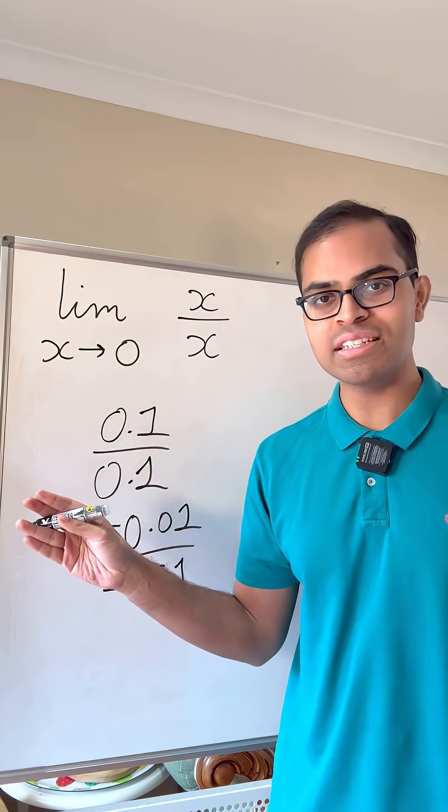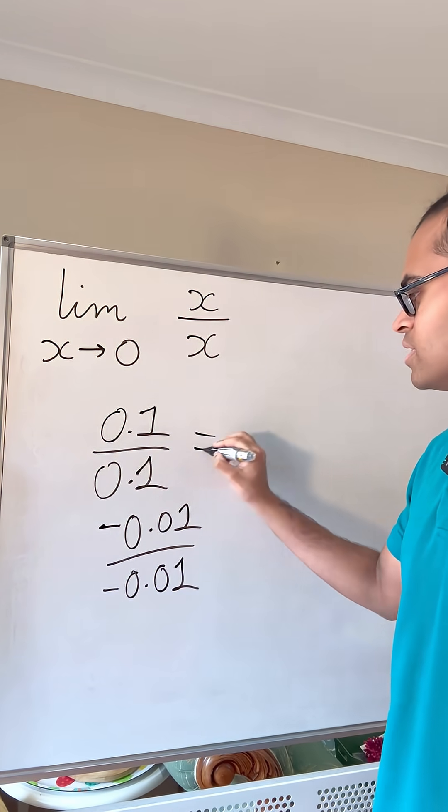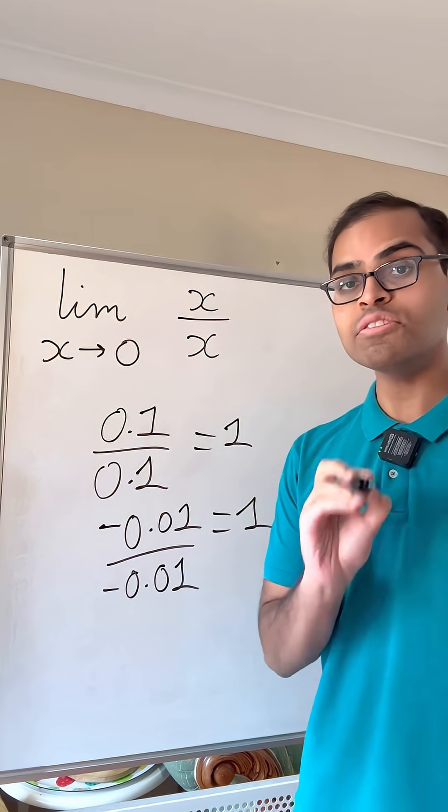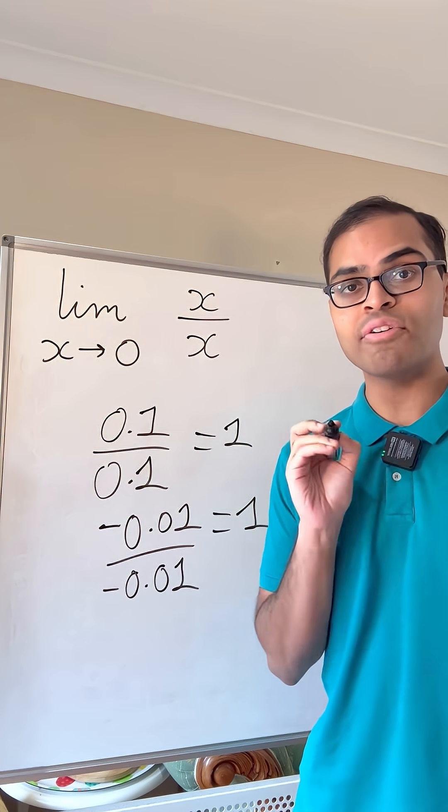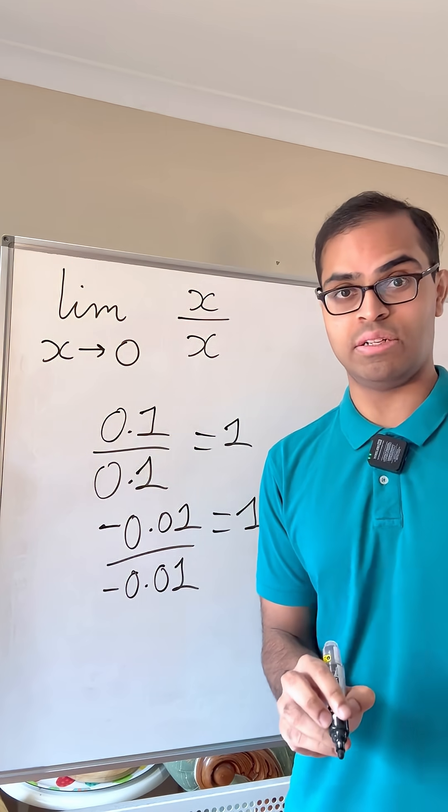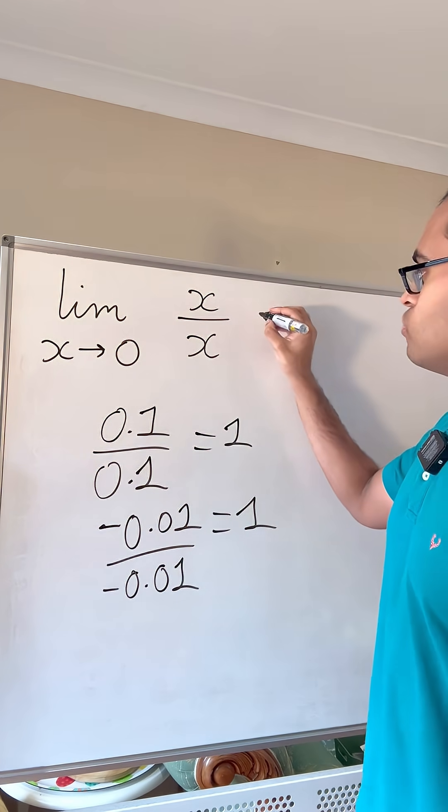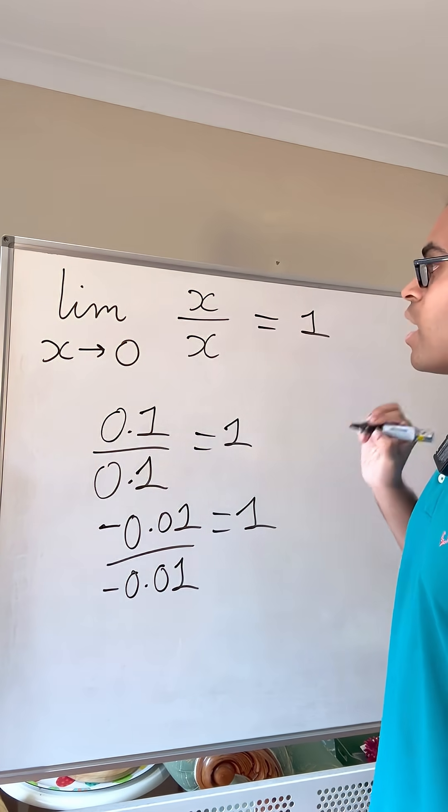Now you're probably going to just stop me and say, well, aren't these all just equal to 1? And yes, you're right. x over x is always equal to 1 for any x that is not equal to 0. So because of that, we say that this limit is equal to 1.